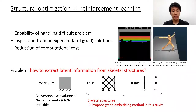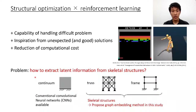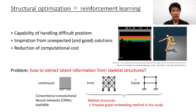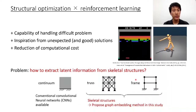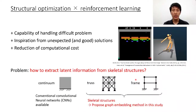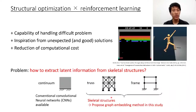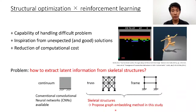We want to fully utilize these advantages, but there is a large problem in this research: how to extract latent information from skeletal structures. This issue arises because conventional convolutional networks are specially designed for regularly shaped inputs, such as raster images. In order to apply machine learning methods to trusses, we have developed a graph embedding method to capture the latent information of structures with complex connectivity.